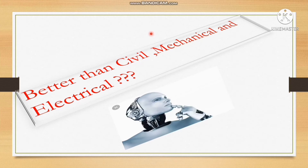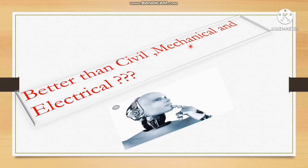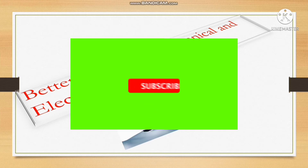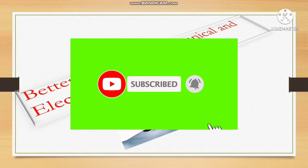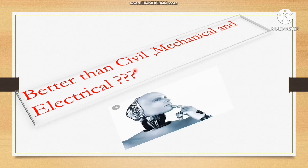For government jobs, non-core branches like computer science, ECE, and EIE are not ideal. Civil, mechanical, and electrical are core branches that are really very good for government jobs — especially civil engineering, which has a lot of government job openings. Mechanical and electrical also have strong government job prospects. There is no branch quite like these core branches when it comes to government employment.